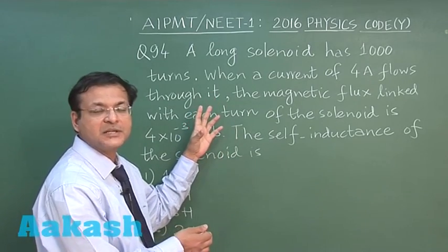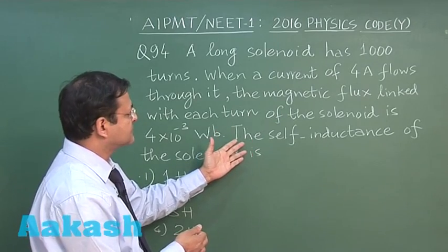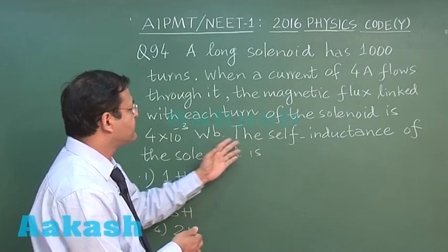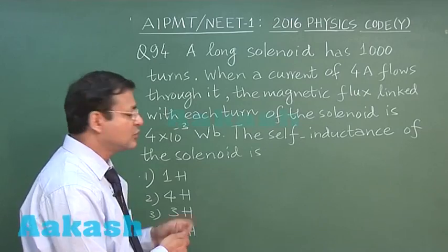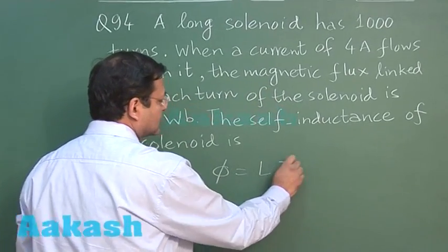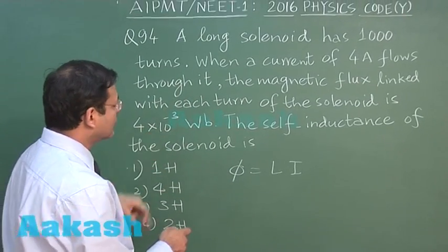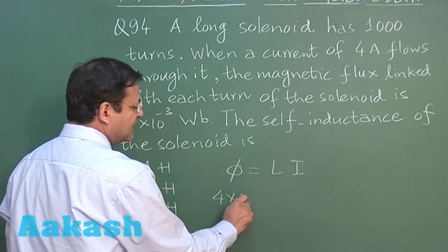If you multiply it to total number of turns then you will be getting the total flux, and then you are supposed to find out the self inductance. You simply use the formula phi is equal to LI.